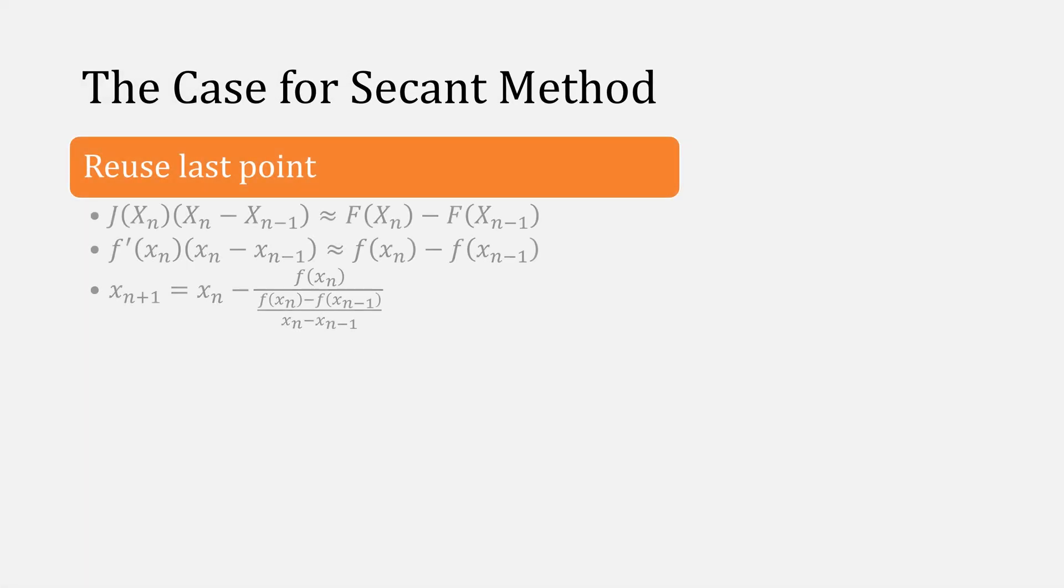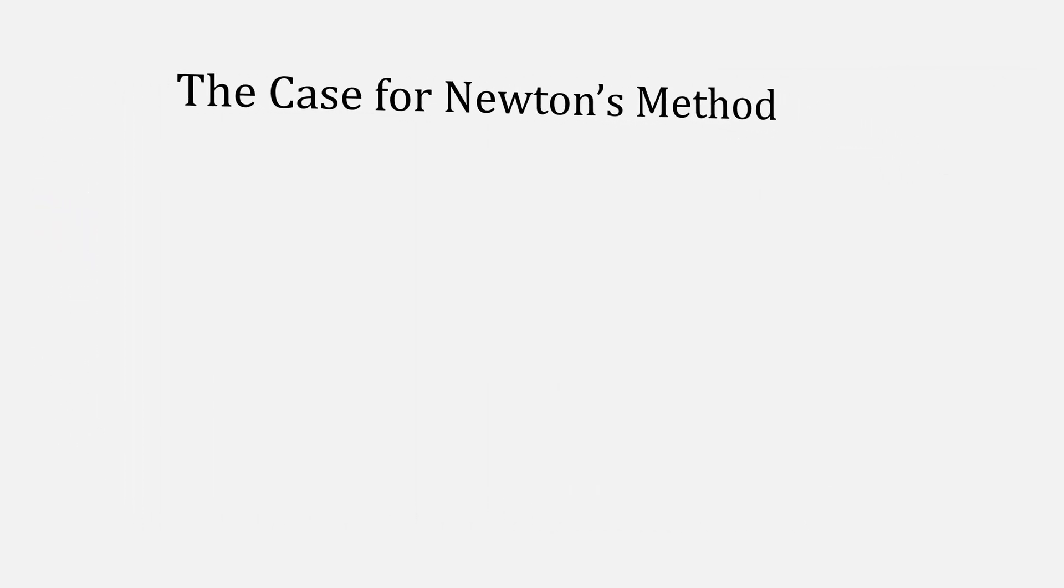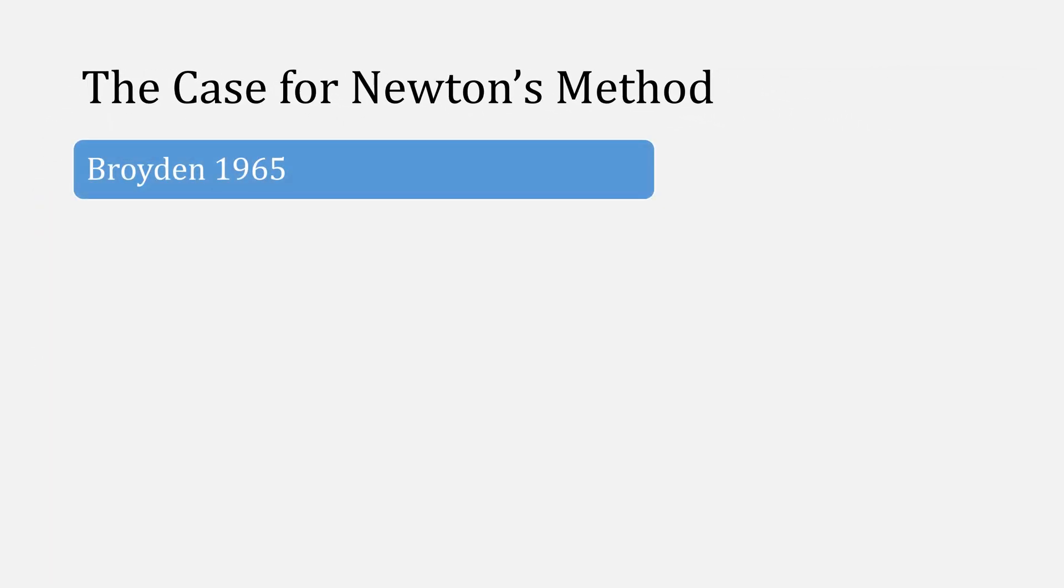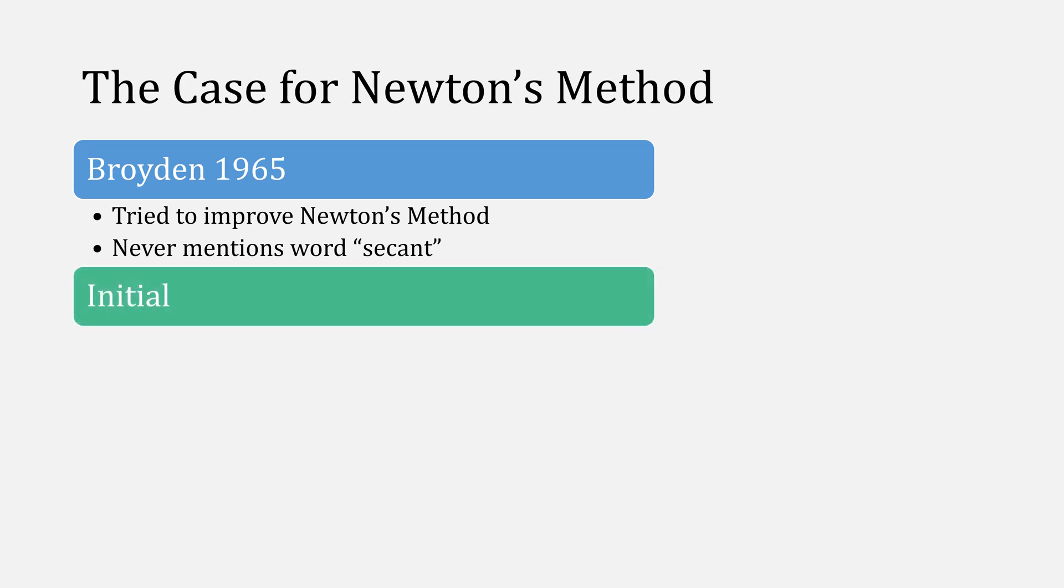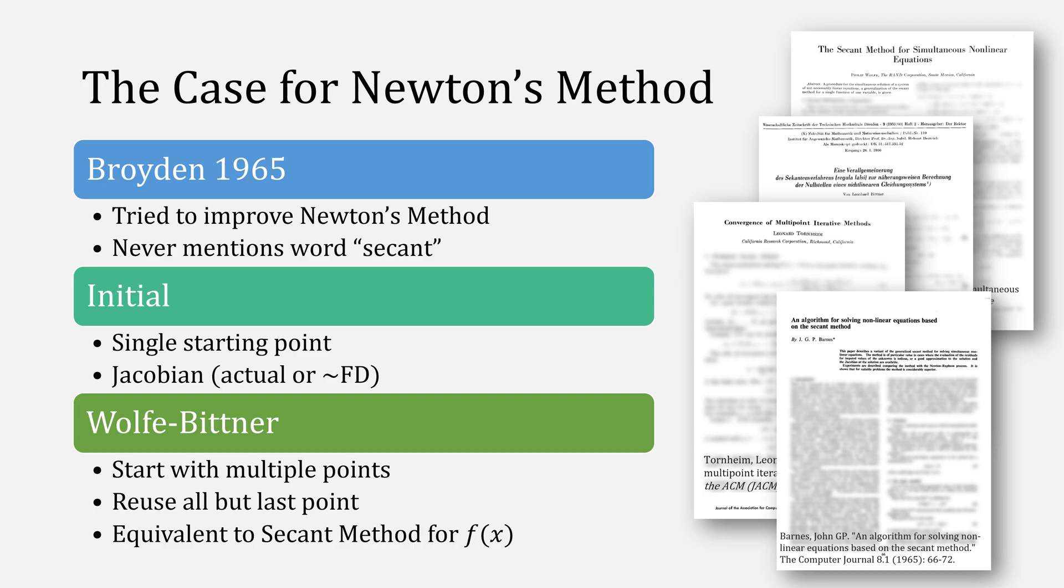It could be argued that because we are reusing our last point, and our notation looks so similar, that this has to be a generalization of Secant method, and you'll note in the literature, even in this just example paper, folks will say that Broyden describes a class of Secant methods based on the Secant equation. There are those who argue though, like Broyden, who never used the word Secant in his paper trying to improve on Newton's method, as well as the initial conditions requiring a single starting point and Jacobian, which Secant method doesn't require, and there's also the Wolfe-Bittner method, which reuses everything but the last point, and is exactly equivalent to Secant method for a single function.